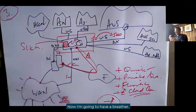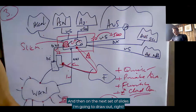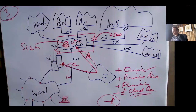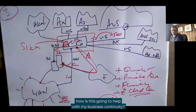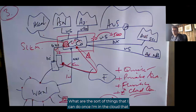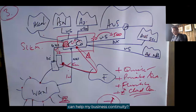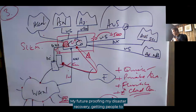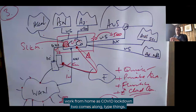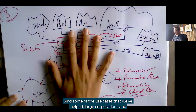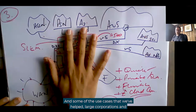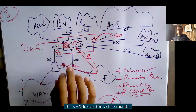Now I'm going to take a breather and on the next set of slides I'm going to draw out — right, I've connected to cloud. How is this going to help with my business continuity? What technologies can we use within the cloud for business continuity, future proofing, disaster recovery, getting people to work from home as COVID lockdown two comes along? And some of the use cases we've helped large corporations and the NHS do over the last six months.